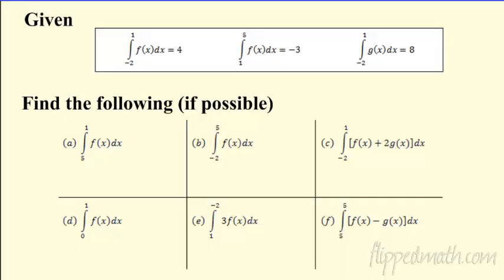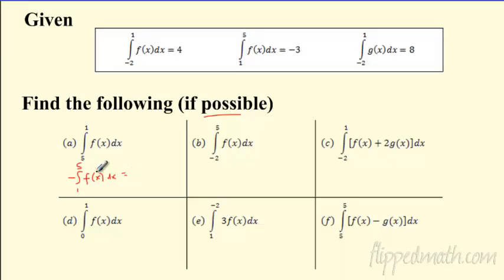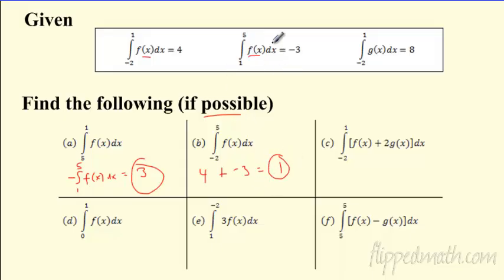Let's do a couple of examples. Given that the integral from negative 2 to 1 is 4, from 1 to 5 is negative 3, and from 1 to 8 is 8. First, the integral from 5 to 1 — going high to low — flip it: it becomes negative of the integral from 1 to 5, which is negative of negative 3, so positive 3. For the integral from negative 2 to 5, use decomposition: negative 2 to 1 is 4, plus 1 to 5 is negative 3, giving 1.